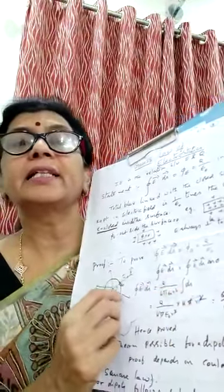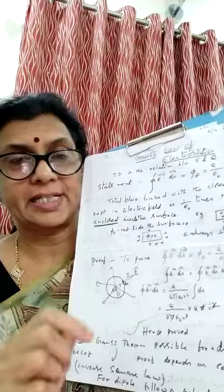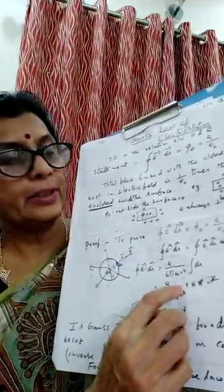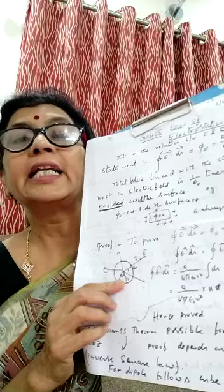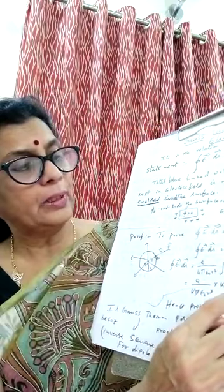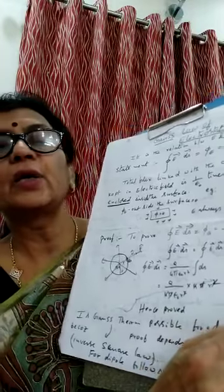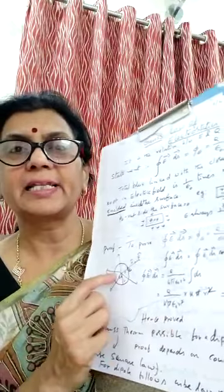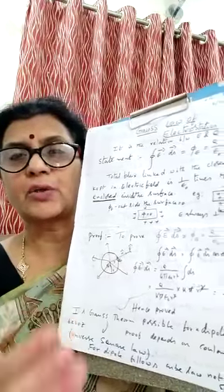So we get E ∮ ds. The surface area of the spherical surface is 4πR². Substituting the value: E × 4πR². We also know from Coulomb's law, E = q / (4πε₀R²), so E × 4πR² = q / ε₀, which equals the right-hand side. In this way we can prove Gauss Theorem for a spherical surface. Not only for a spherical surface, but for any general closed surface you can prove it — if you are interested, please go through the textbook.